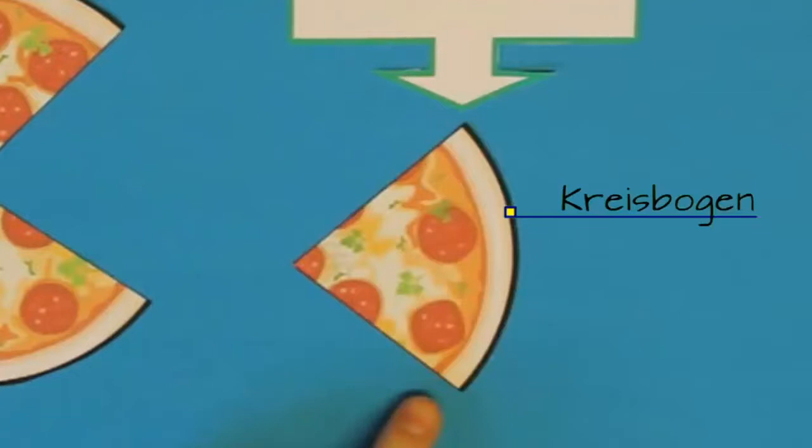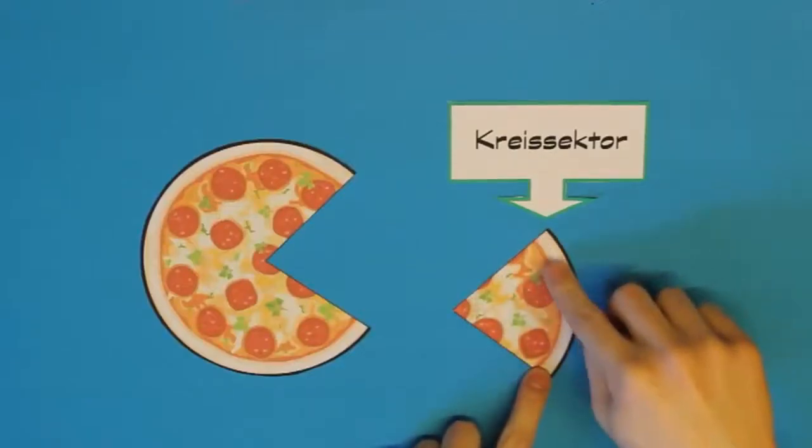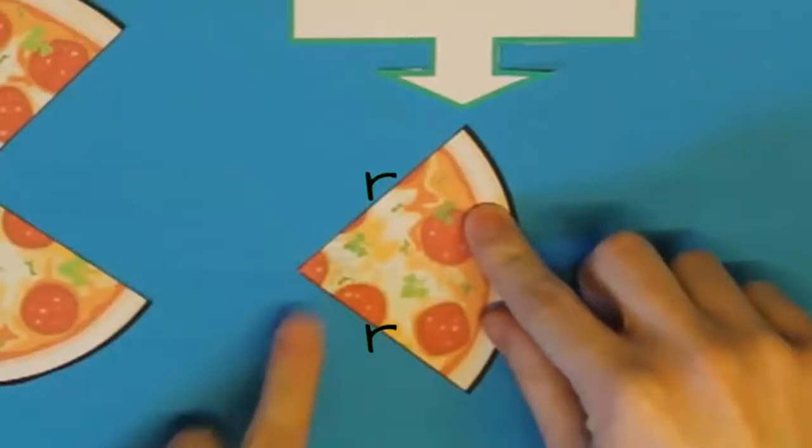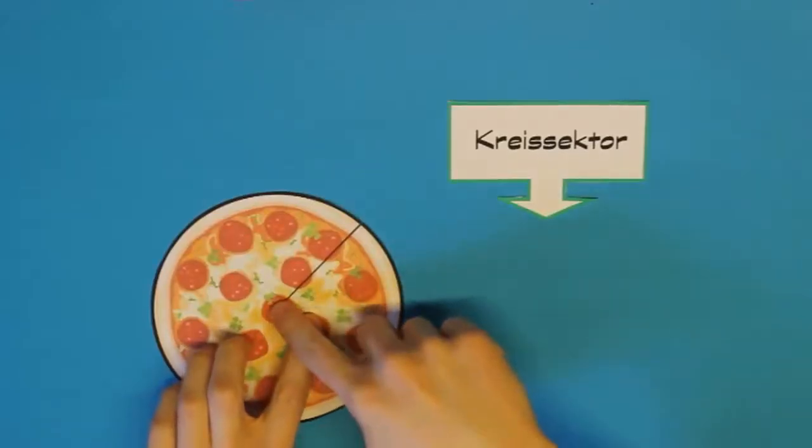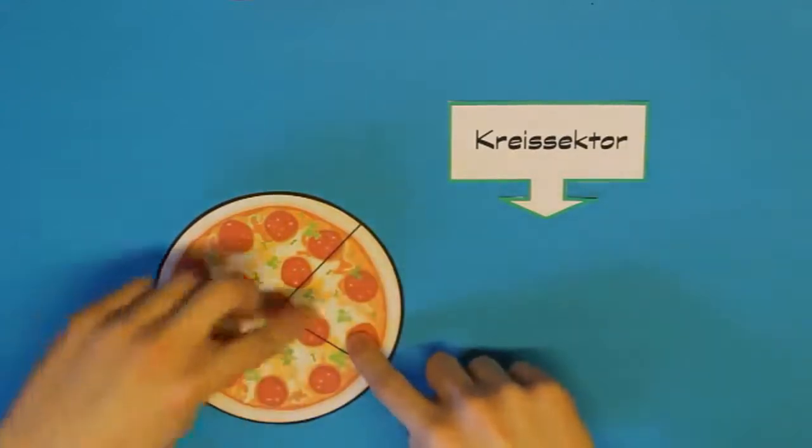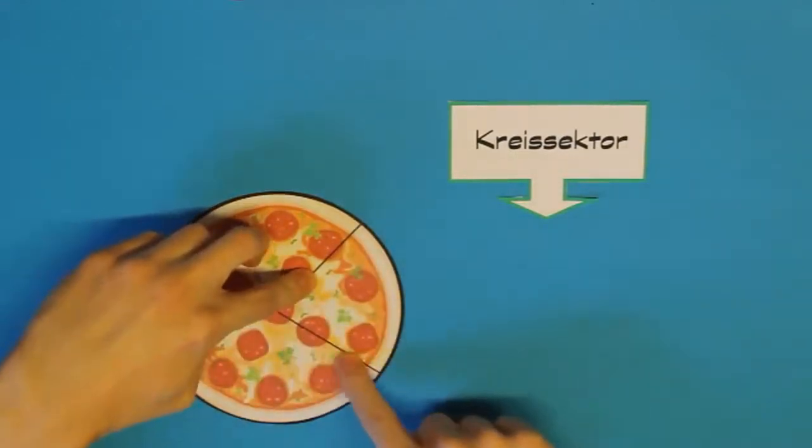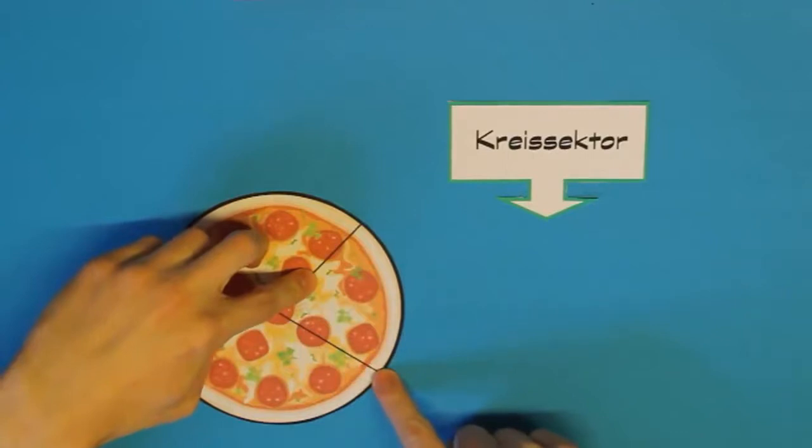Die zwei geradlinigen Strecken hier sind nichts anderes wie der Radius. Dann schieben wir das Stück wieder hinein. Wie ihr sehen könnt, beginnt die Linie beim Kreismittelpunkt und verläuft bis zur Kreislinie. Also ist es wirklich der Radius. Das gilt auch hier für die zweite Strecke.